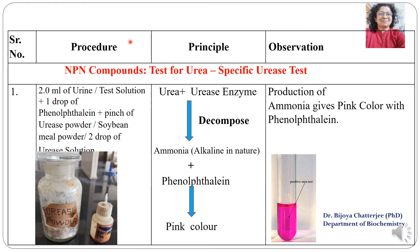The next test is the urease test, which is specific for urea. Take 2 ml of urine, add one drop of phenolphthalein reagent and a pinch of urease powder or urease solution. Leave it for 15 to 20 minutes. Urea in the presence of urease enzyme decomposes into ammonia, which is alkaline and reacts with phenolphthalein to produce a pink color. The pink color is indicative of the presence of ammonia released from urea splitting — a very specific test for urea.